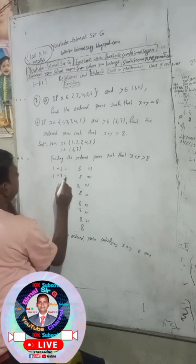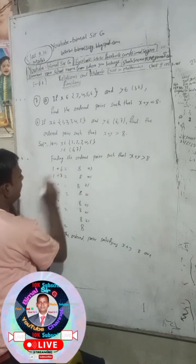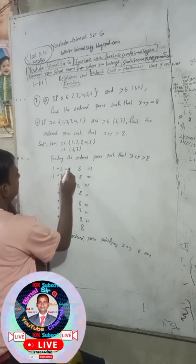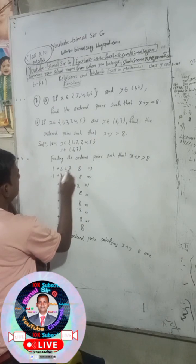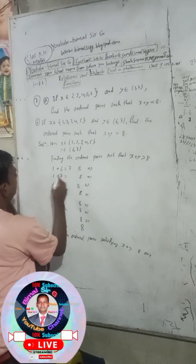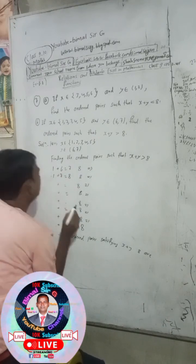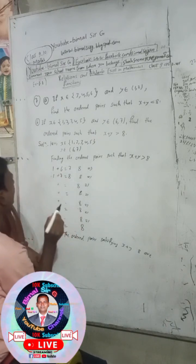For example, 1+7=8, and we check whether each pair satisfies x plus y greater than 8.